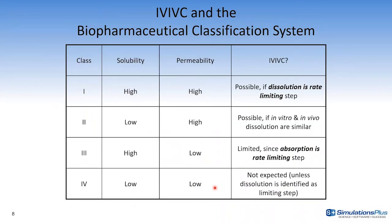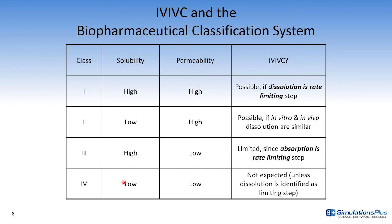Level A IVIVC is the highest correlation and the most informative; it is also preferred for biowaiver. In Level A, you perform a point-to-point relationship between in vitro dissolution and in vivo input rate, which can be linear or non-linear. In Level B, in vitro dissolution time is correlated with mean residence time. In Level C, it is a single-point relationship correlating a single dissolution parameter — for example, the time at which 50% of the drug dissolves — with PK parameters such as Cmax and AUC. For BCS Class I, IVIVC is possible if dissolution is the rate-limiting step. For Class II, it is possible if in vitro and in vivo dissolutions are similar. For Class III, IVIVC may be limited, and for Class IV it is generally not expected unless dissolution is the limiting step.